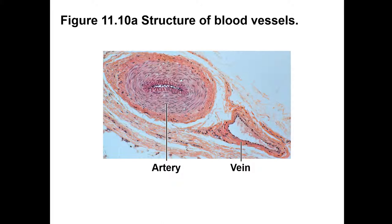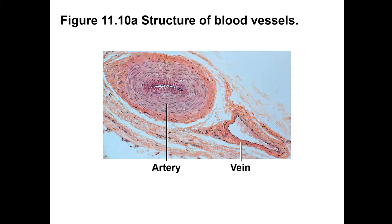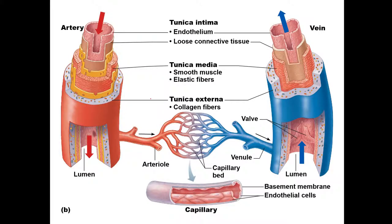Now let's talk about blood vessels, since we're covering the cardiovascular system. We have arteries, veins, arterioles, venules, and capillaries. Arteries are thick — they have a very well-developed muscular wall — while veins are not as thick. Also notice that the lumen is much more narrow in an artery than in a vein. Know the gross anatomy of arteries and veins — you don't have to know the super fine details.